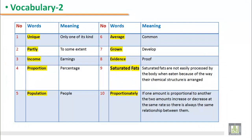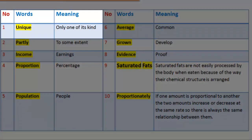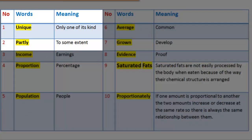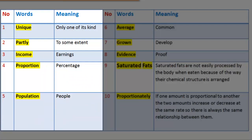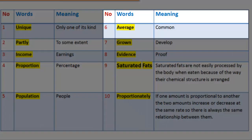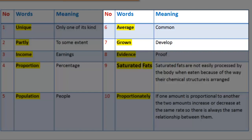Vocabulary 2. 1. Word: Unique — Meaning: only one of its kind. 2. Word: Partly — Meaning: to some extent. 3. Word: Income — Meaning: earnings. 4. Word: Proportion — Meaning: percentage. 5. Word: Population — Meaning: group of people in an area. 6. Word: Average — Meaning: common. 7. Word: Grown — Meaning: develop. 8. Word: Evidence — Meaning: proof.